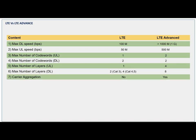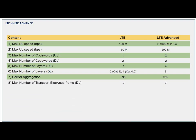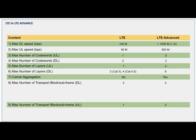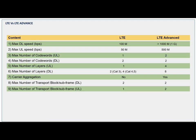The main feature of LTE Advanced is carrier aggregation. In LTE Advanced we can aggregate carriers up to 100 MHz, which is five times 20 MHz — meaning you can add five 20 MHz carriers in the same layer.